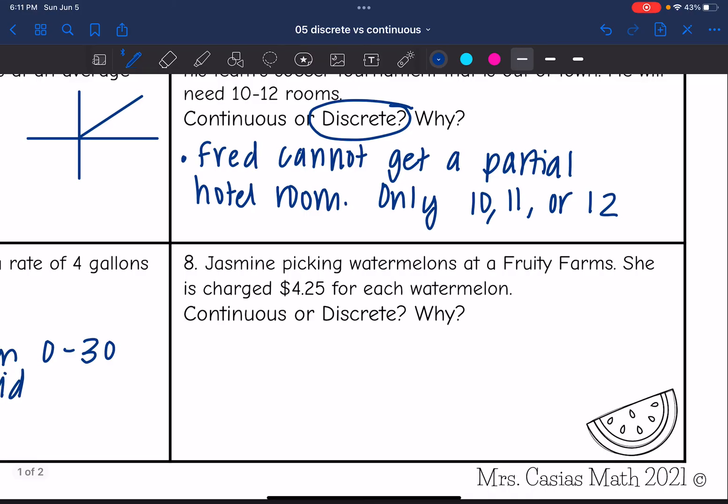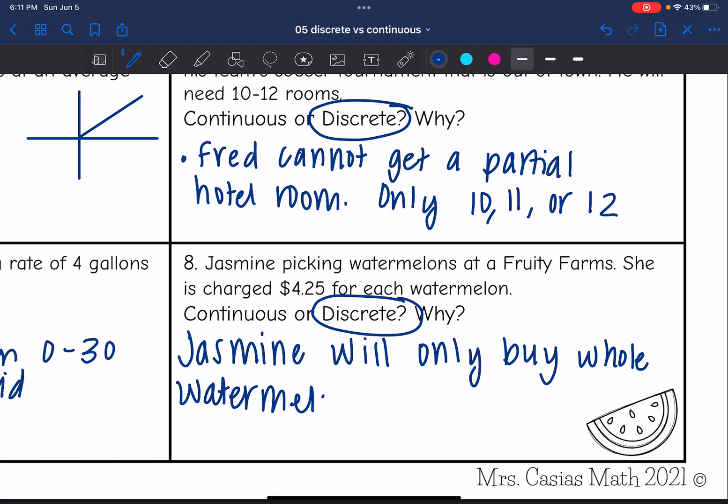Okay, then last one. Jasmine is picking watermelons at Fruity Farms. She is charged $4.25 for each watermelon. Continuous or discrete and why? This would definitely be discrete because I don't think Fruity Farms would want you buying one-third or one-fourth or two-thirds of a watermelon. She's only going to be able to buy whole watermelons. So this is discrete because Jasmine will only buy whole watermelons. Meaning no partials.